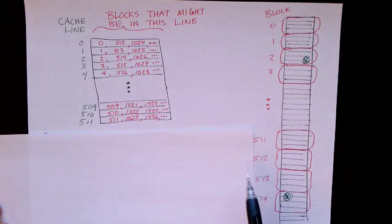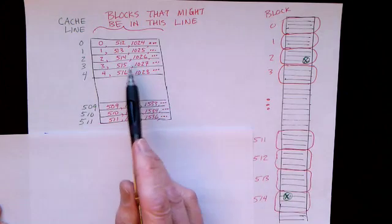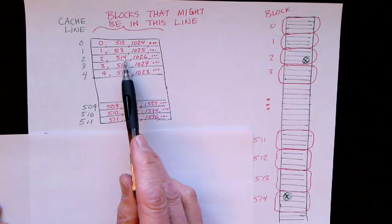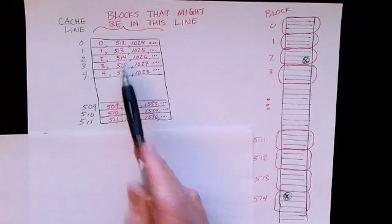So for example, if we're looking for block 514, we look in line number 2. And it's either there or it's not. So that's what the tag bits are for.